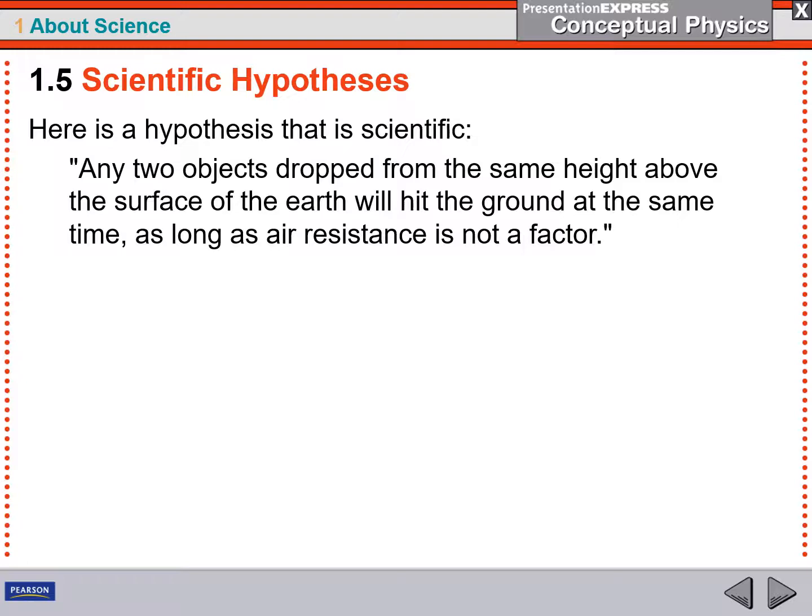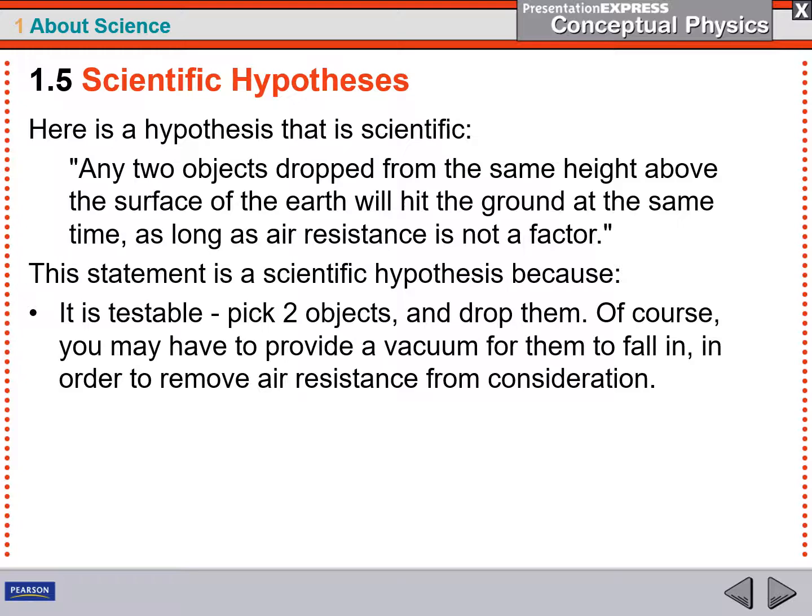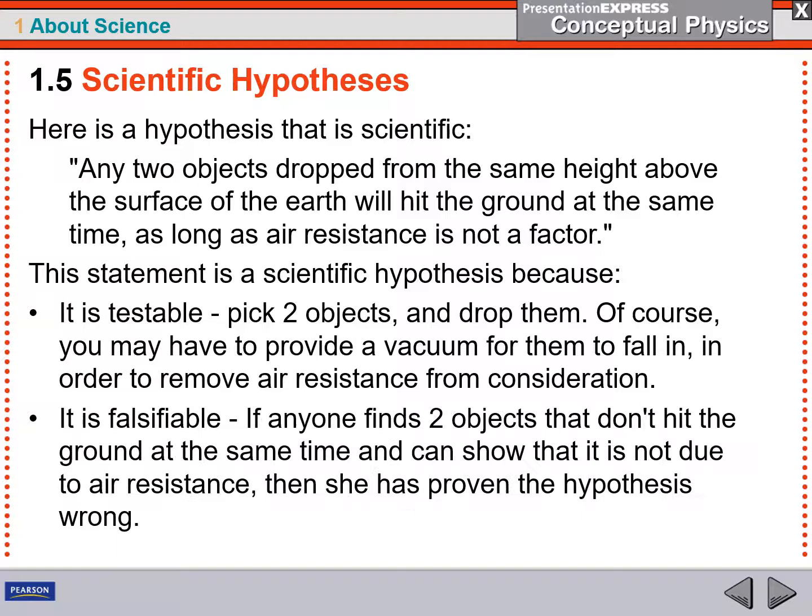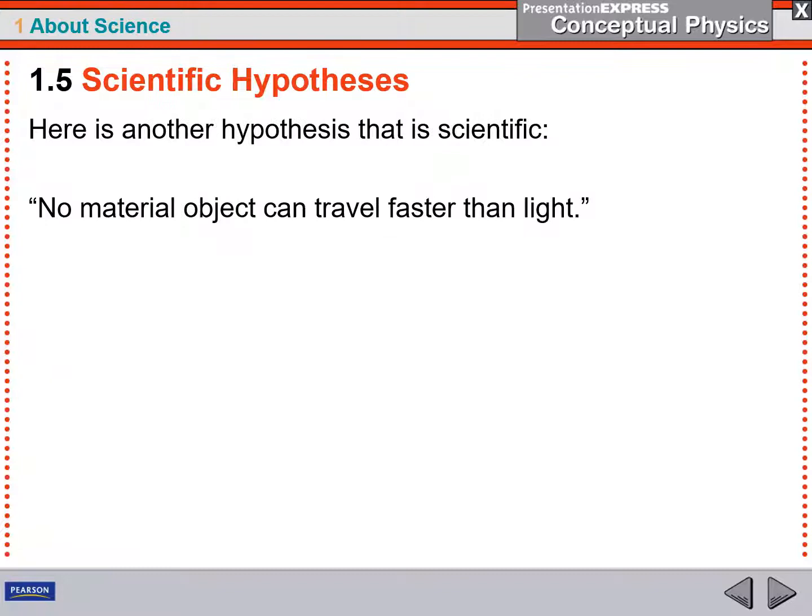Here's a hypothesis that's scientific. Any two objects drop from the same height above the surface of the earth will hit the ground at the same time as long as air resistance is not effective. So this is very specific. It says drop two objects at the same height, hit the ground at the same time as long as somehow you can ignore air resistance. This is a scientific hypothesis because it is testable. You could pick up two objects and drop them and find out if you're right or not, but it's also falsifiable. You might find out they don't hit the ground at the same time.